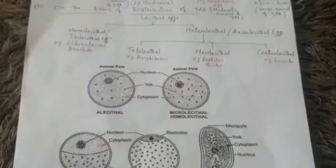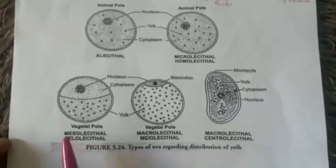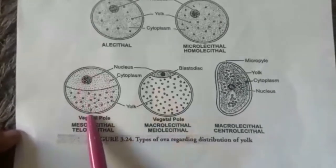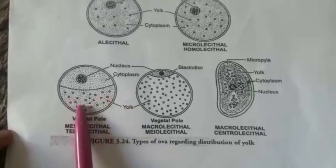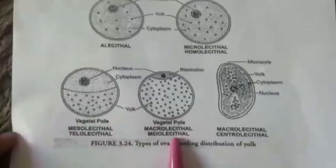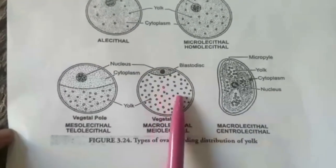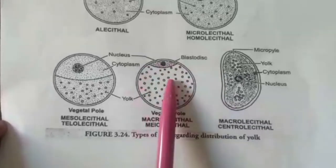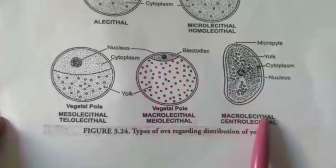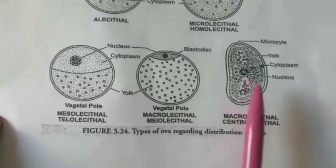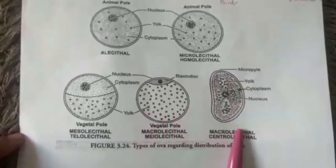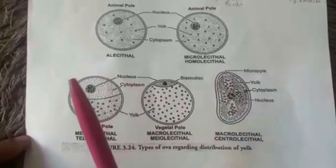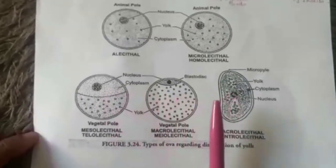Now let's classify these eggs on the basis of amount of yolk as well as distribution of yolk. The frog's egg is mesolecithal because it contains a moderate amount of yolk, and it is telolecithal because yolk is concentrated towards one pole. The bird's or reptile's egg is macrolecithal because it contains a large amount of yolk, and it is meiolecithal because yolk fills the whole ooplasm leaving behind a disc-like area. The insect egg is macrolecithal as well as centrolecithal — it contains a large amount of yolk filling the ooplasm and leaving behind a thin peripheral layer of cytoplasm.